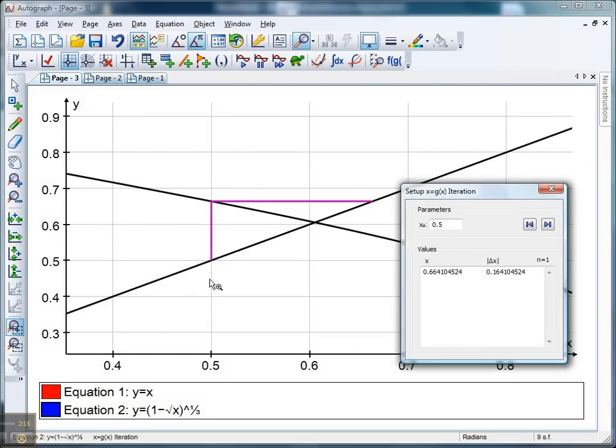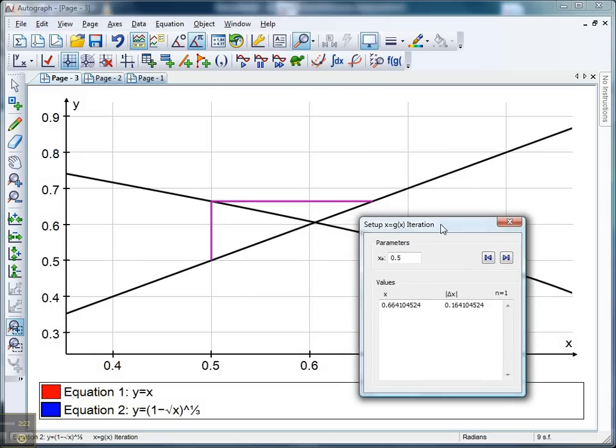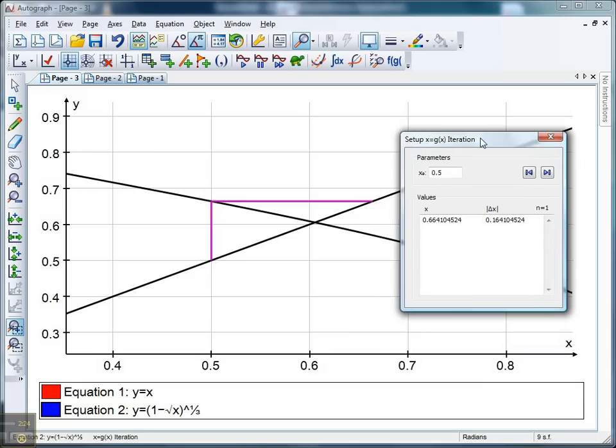So Autograph has substituted 0.5 in. It's given us a value of 0.664, and the classic iteration process has begun. Click right again and we can see what Autograph is doing. It's zooming in, zooming in, and it's your classic cobweb converging on that intersection point.